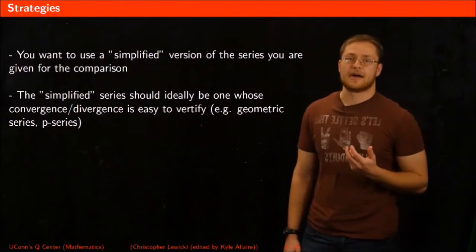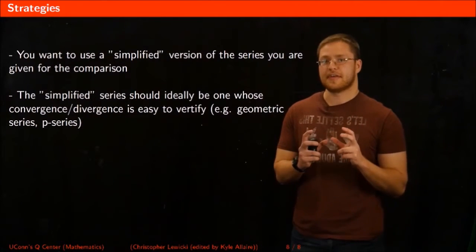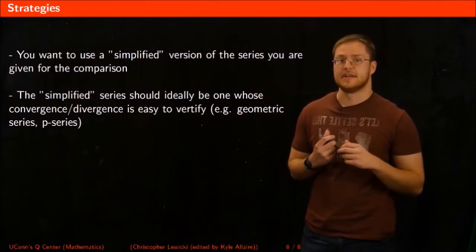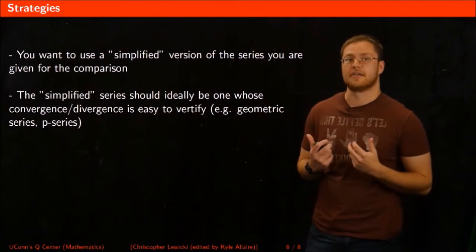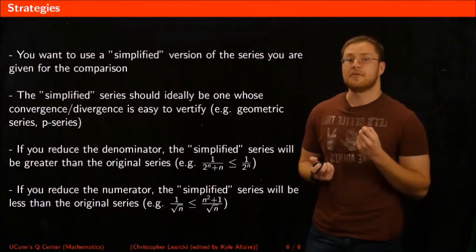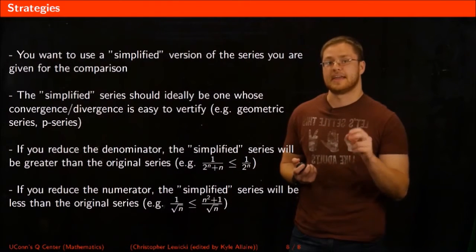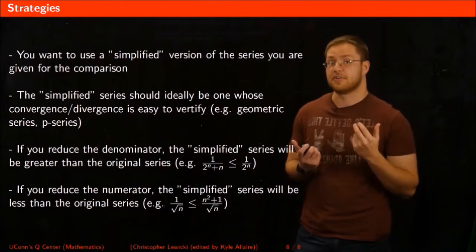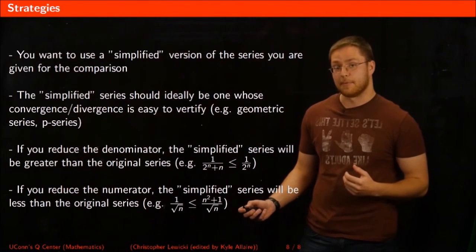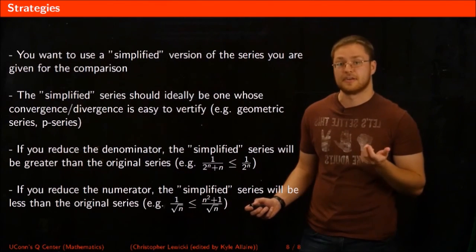To summarize the strategies: the basic gist of the comparison test is you want to take the series you're given and compare it to a simplified version of the series. The simplified version should be something you can easily tell is convergent or divergent, such as a geometric series or a P-series. Importantly, if you simplify the denominator in your simplified series, that causes your new series to be greater than your original series, whereas if you reduce the numerator, the simplified series will be less than your original series.